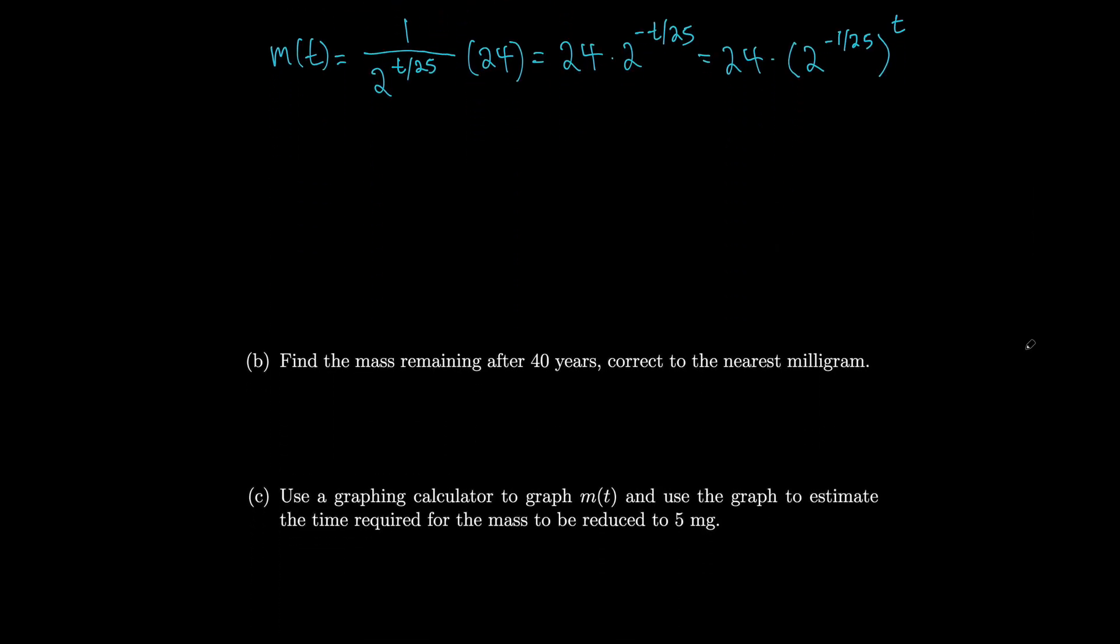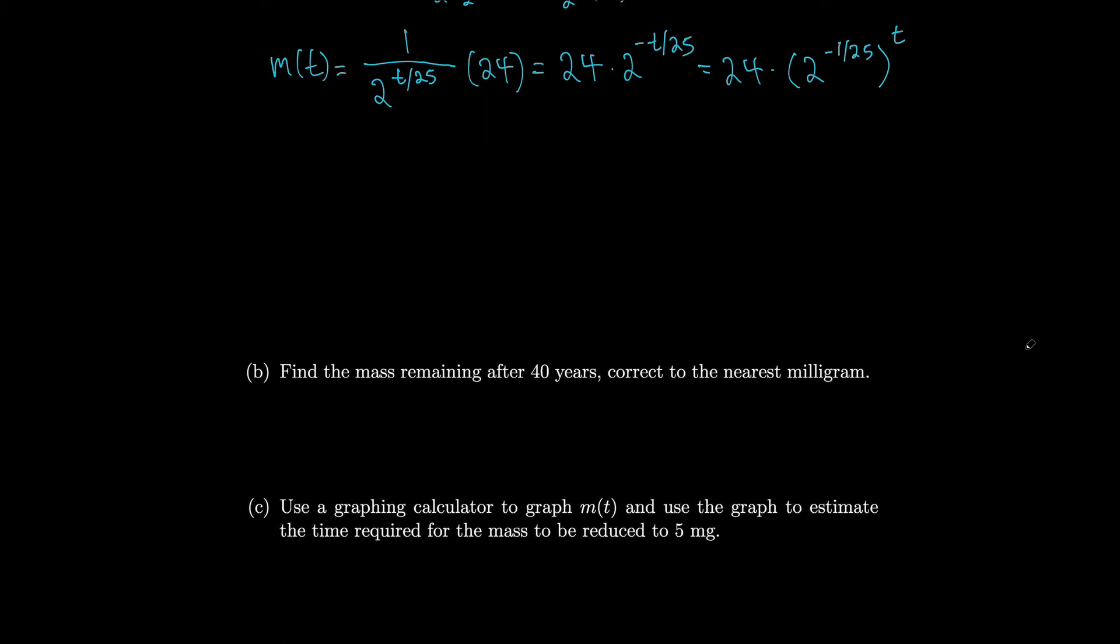Let's see if we could find the mass remaining after 40 years correct to the nearest milligram. So that would be m of 40. Using our formula, it's 24 times 2 to the minus 40 over 25. And we can use the calculator to see that that's approximately 7.9 milligrams. I think we're supposed to go to the nearest milligram though. So I should just say it's approximately 8 milligrams.